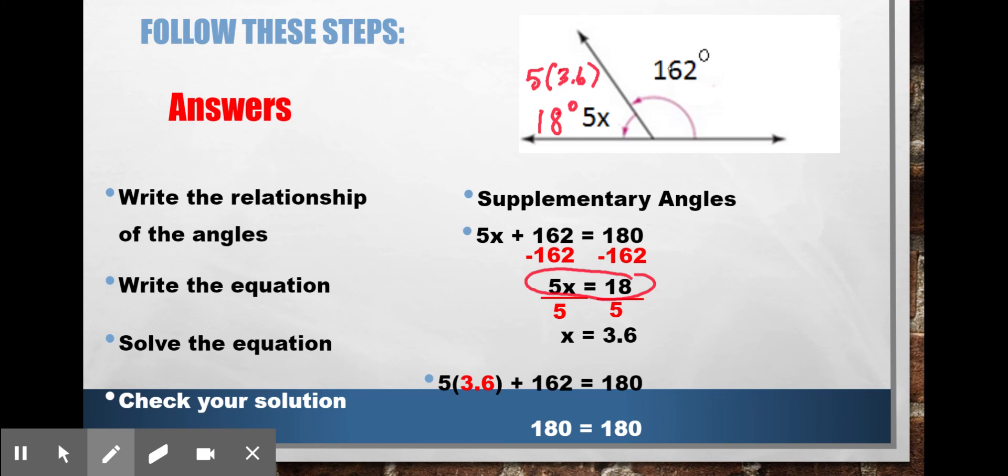So 18 degrees plus 162 should equal 180, and that is how I can check to see that I have the correct measurement. And I get 180 degrees, so yes, I do have the right answer.